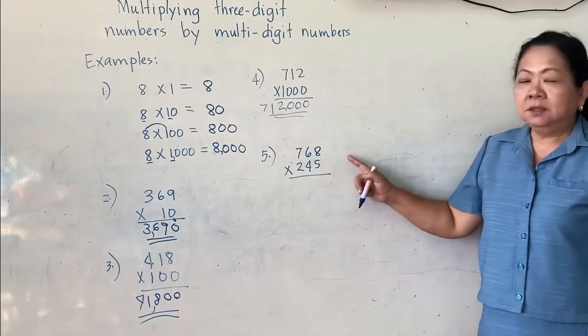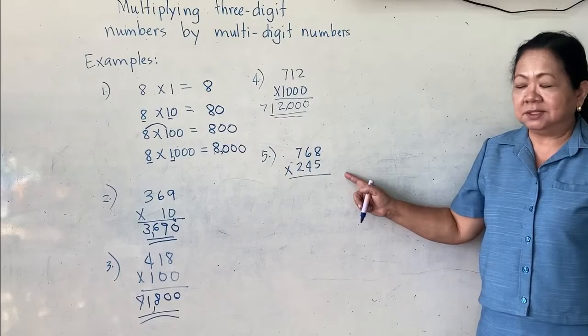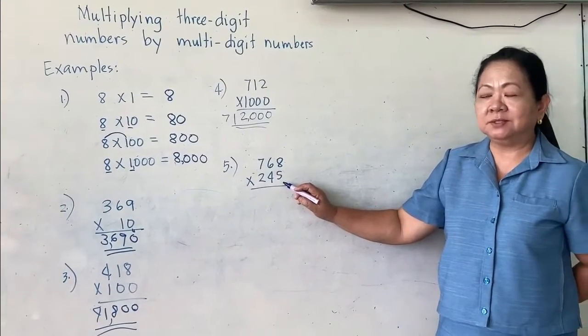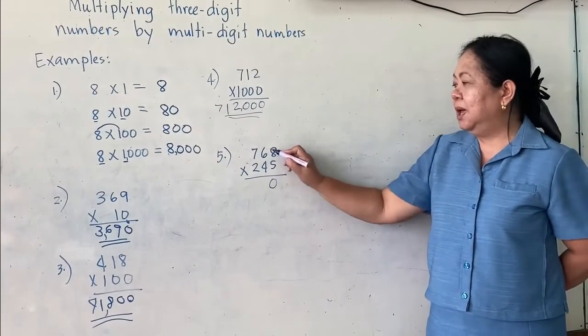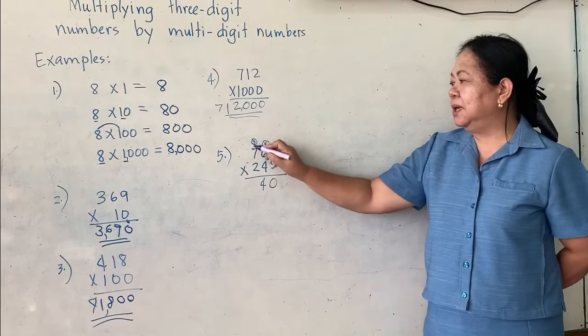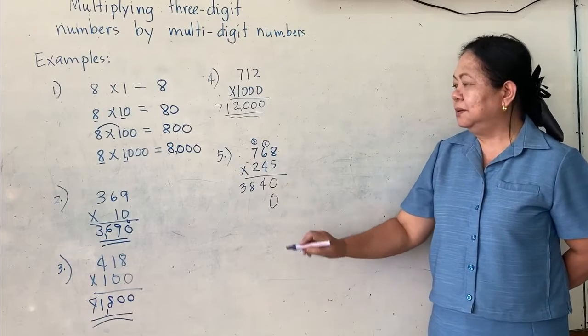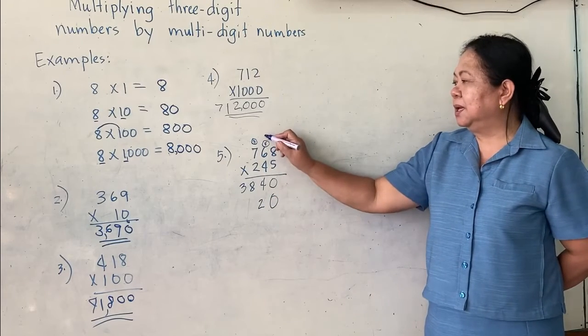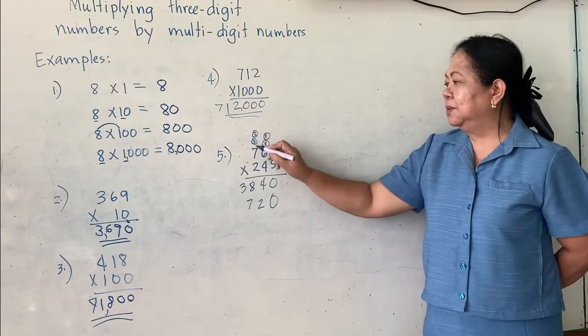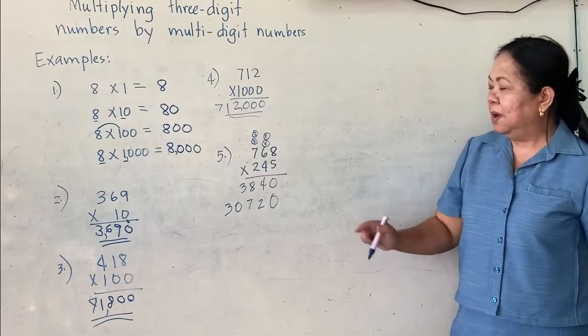And then, here, we are to multiply 3 non-zero digits and 3 non-zero digits. So, 5 times 8. You start with the ones place. Multiplier on the ones place. 5 times 8 is 40, carry 4. 5 times 6 is 30 plus 4 is 34. Carry 3. 5 times 7 is 35 plus 3 is 38. And then, right here, 0. 4 times 8 is 32, carry 3. 4 times 6 is 24 plus 3 is 27. Carry 2. 4 times 7 is 28 plus 2 is 30. Write everything because now, our number to carry that over.